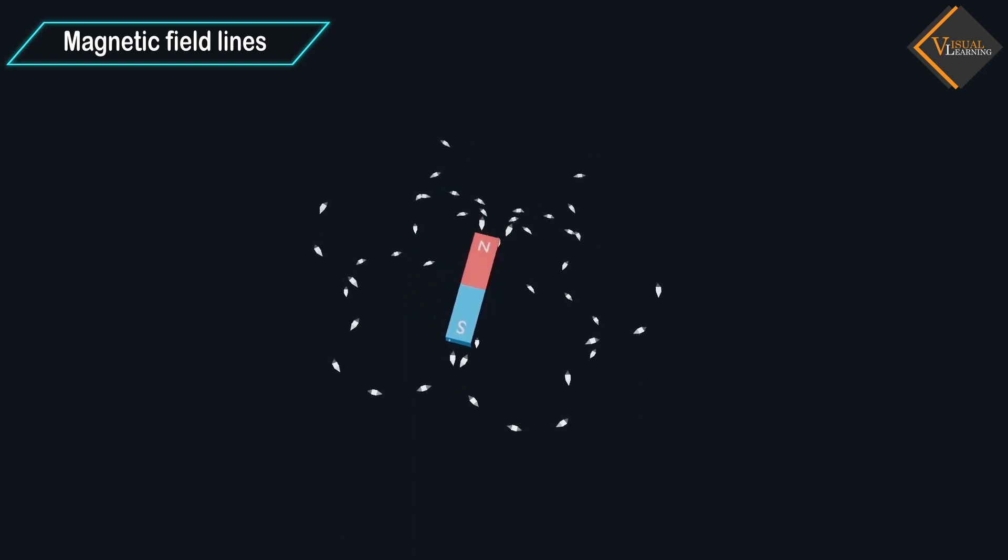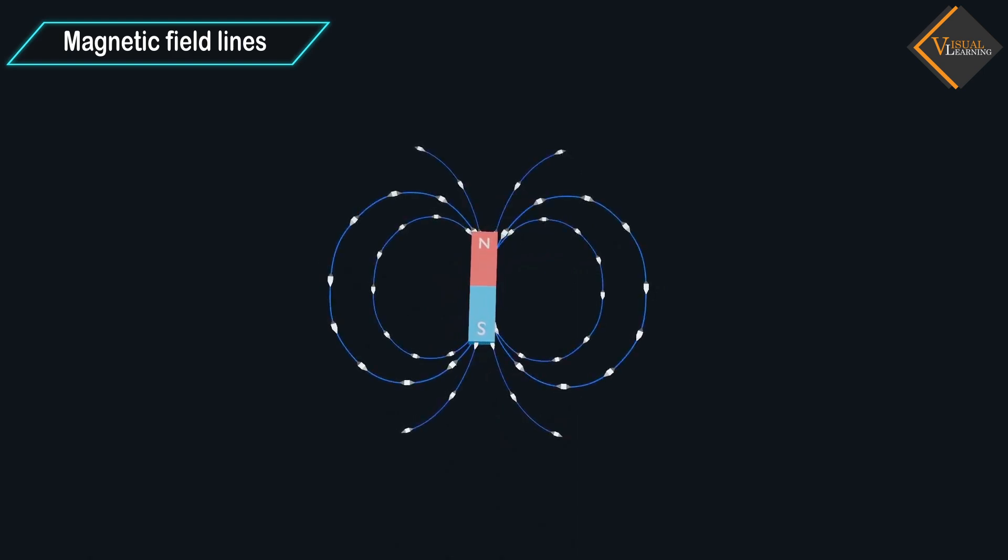And now we can see all these iron filings get attracted and aligned in such a way that it forms a pattern. And this pattern is the pattern of magnetic field lines.